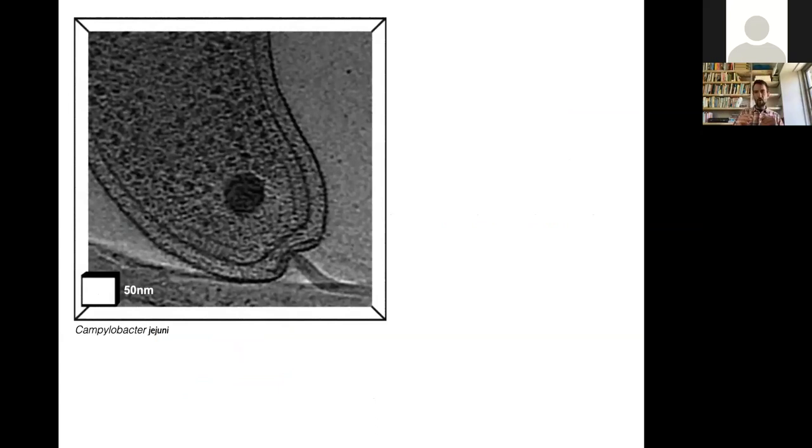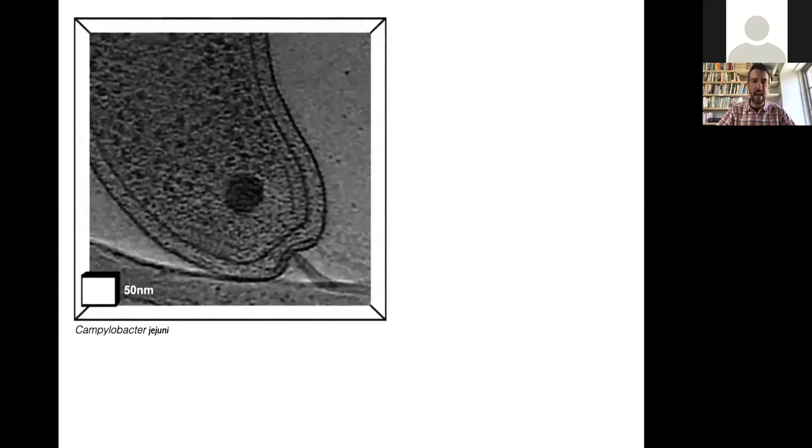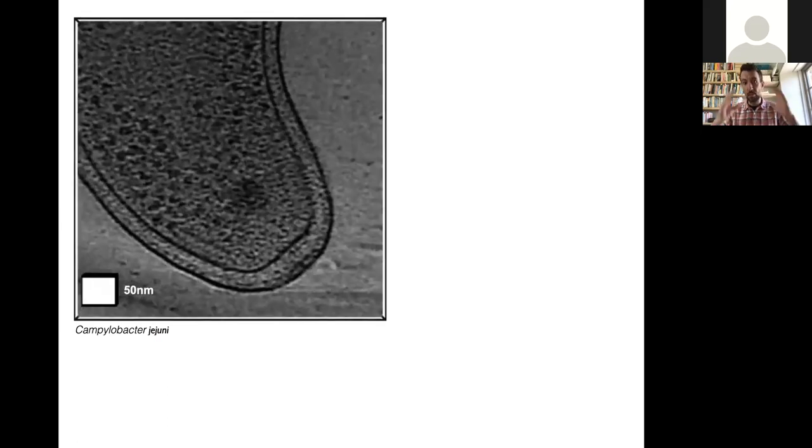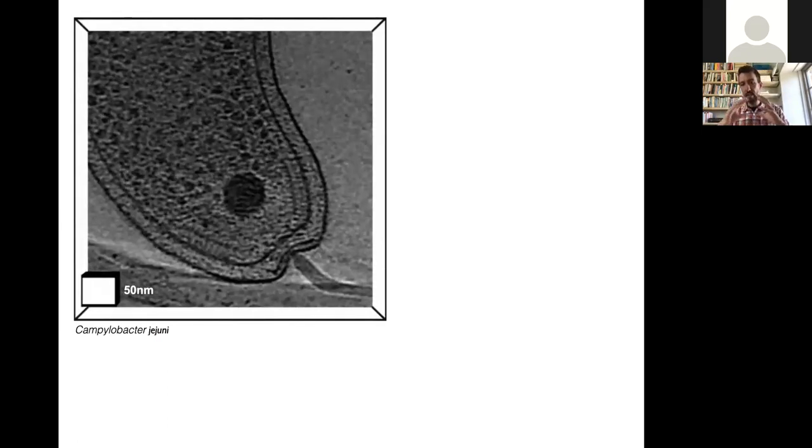This is actually a slice through a three-dimensional rendering of an entire cell pole with an embedded bacterial flagella motor. In electron cryotomography, what we do is we flash freeze our specimen and then take images of it in an electron microscope over a range of angles. We can then take those images and in a manner directly analogous to a CAT scan or CT scan, we can reconstruct the three-dimensional model of the bacterium.